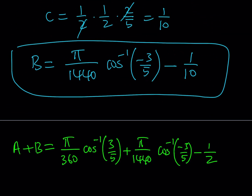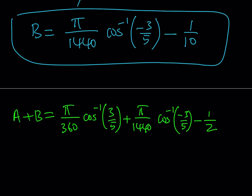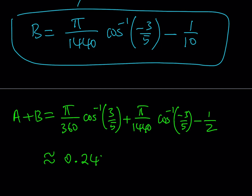We can write the answer in its simplest form. A + B = (π/360)·cos⁻¹(3/5) + (π/1440)·cos⁻¹(−3/5) − 1/2, which is approximately 0.2404347884493.